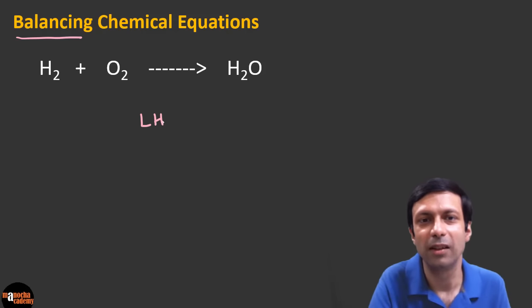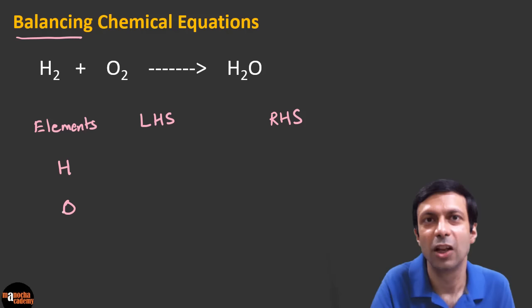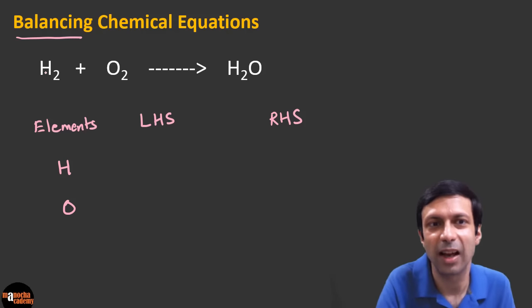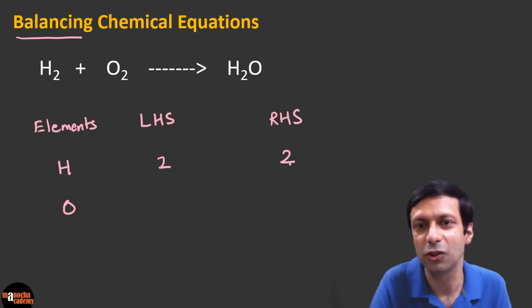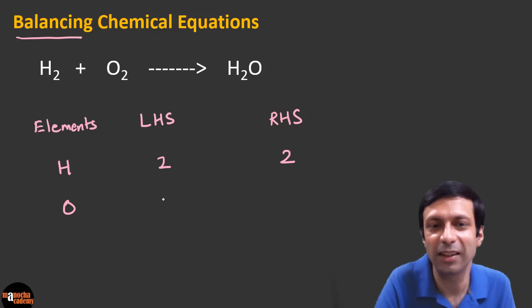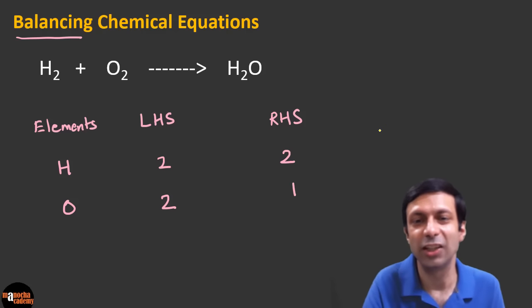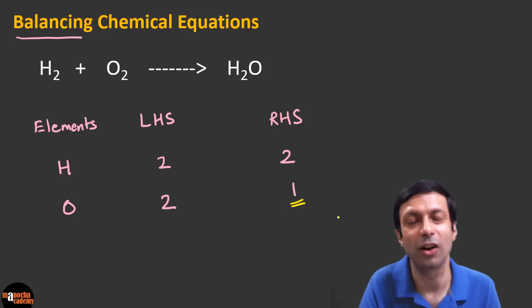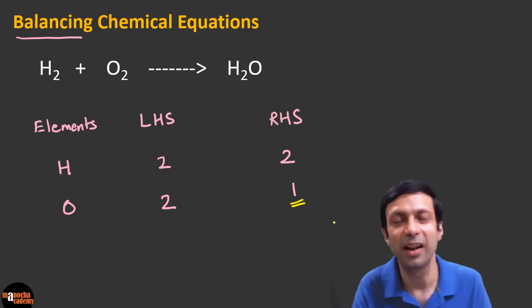Let's see if this equation is balanced. We'll look at the number of atoms of each element on the left side (reactants) and right side (products). I'll make two columns: LHS and RHS. The elements are hydrogen and oxygen. How many hydrogen atoms on the left? Two. On the right? H₂ — that's two. How many oxygen atoms on the left? Two. On the right? One. So this equation is not balanced because the oxygen atoms on the left and right are not the same — hydrogen is balanced but not oxygen.